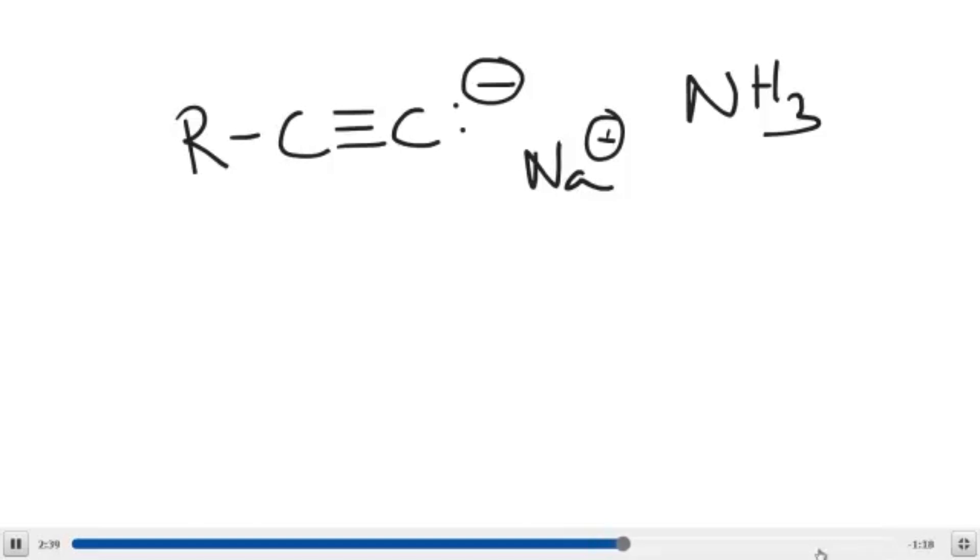That is a primary carbon. So even though this is a really strong base, it's not a bulky base, so it tends to favor the substitution reaction. If you tried to use this type of base on a secondary or tertiary substrate, because it is such a strong base, it will do an E2 elimination. It will not do a substitution. So be very careful with that.